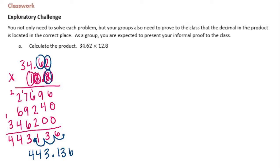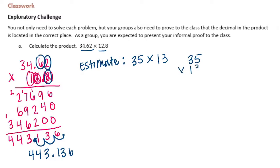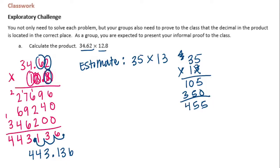Now I need to prove that the decimal point is in the right spot, and I'm going to do that by estimating. I'll round thirty-four and sixty-two hundredths to thirty-five, and round twelve and eight tenths to thirteen. So let's do thirty-five times thirteen. Three times five is fifteen, carry the one. Three times three is nine, plus one is ten. One times five is five, one times three is three. We get four hundred fifty-five, which is pretty close to four hundred forty-three.